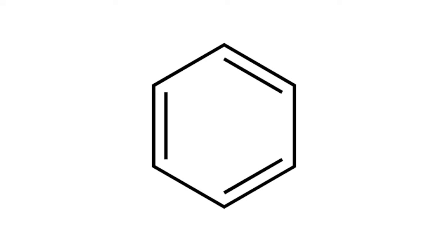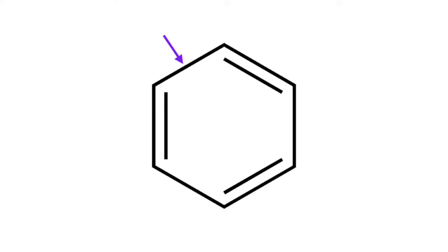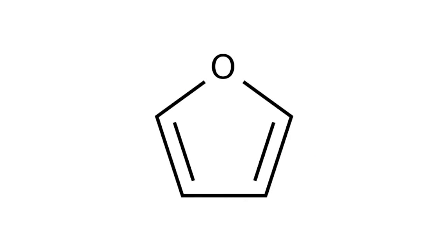To easily determine whether something is conjugated, you should be able to say double-single, double-single, double-single without saying single-single or double-double while going around the ring. In this heterocyclic example, oxygen has two lone pairs, one of which can be used as pi electrons to complete conjugation.